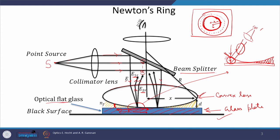As we move away from the center of this system, the thickness of the air gap increases. We may correlate this system with the wedge shaped film studied in the last class. Suppose at a certain point, the air gap thickness is d, which is of course a function of x, where x is the distance of this particular air gap from the center of the system. We also assume that the radius of curvature of the lens is R.